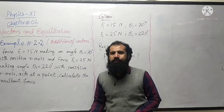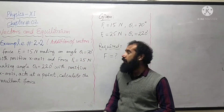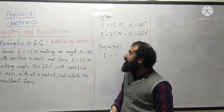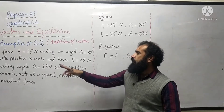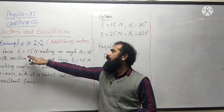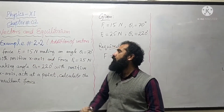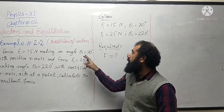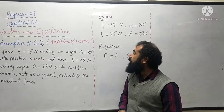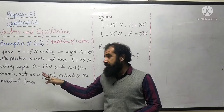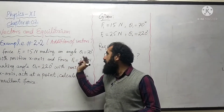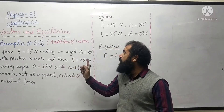The problem is related to addition of vectors. Two vectors are given: a force F1 with magnitude 15 newtons making angle theta-1 that is 70 degrees with the positive x-axis.